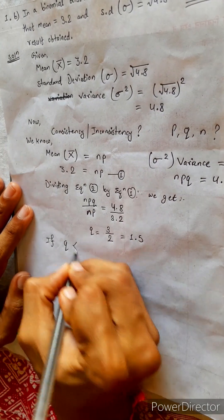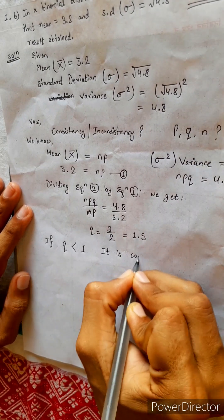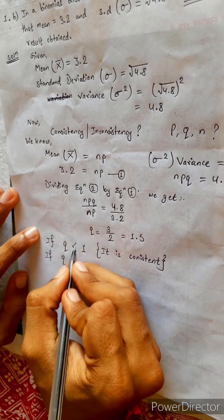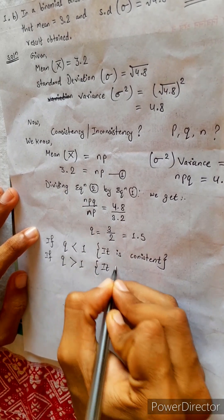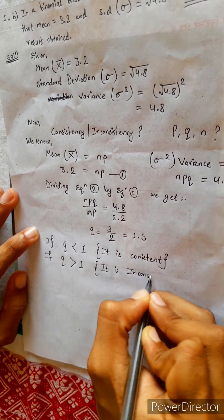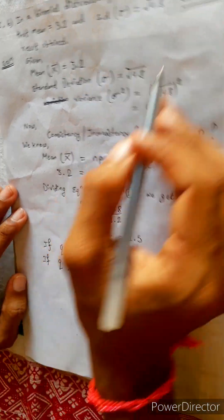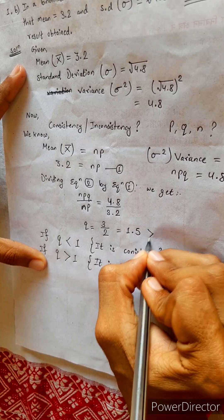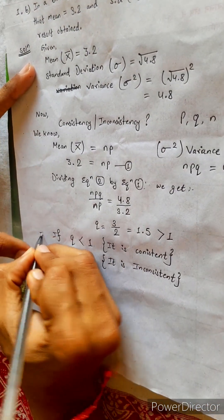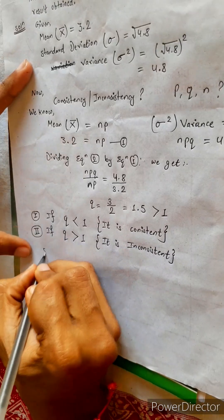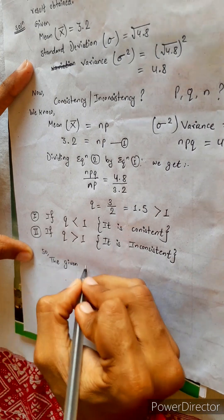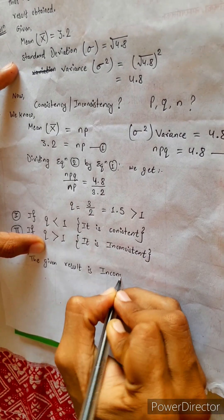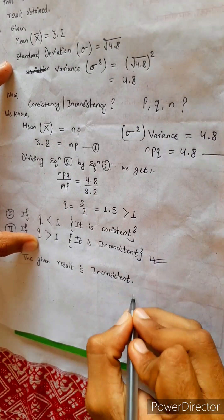If Q is less than 1, it is consistent. If Q is greater than 1, then it is inconsistent. Now, Q equals 1.5, which is always greater than 1. Greater than 1 means condition 2 applies. So the given result is Q greater than 1, and therefore it is inconsistent using this property. We got the answer.